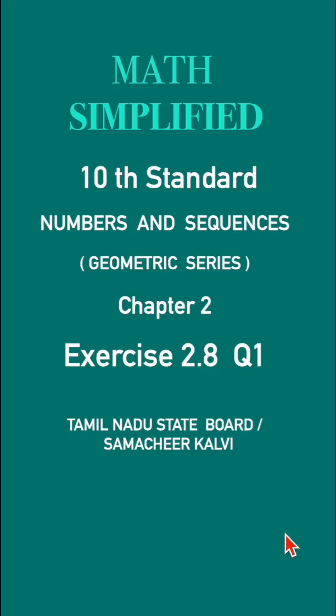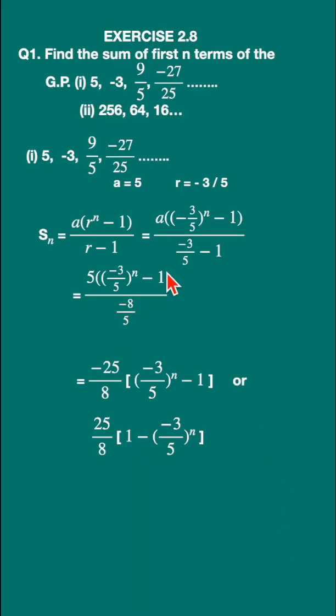Exercise 2.8, question 1: Find the sum of the first n terms of G.P. This is the first sum. Let us write down the G.P. here. The first term is 5 and the common ratio is minus 3 upon 5.